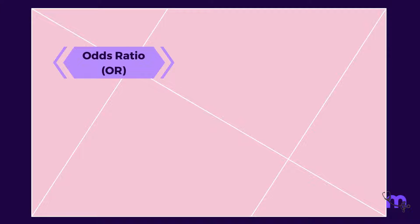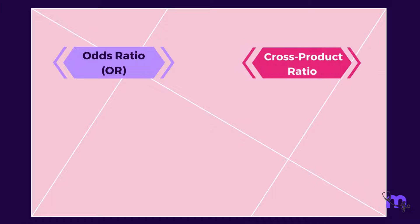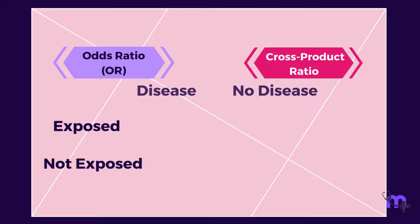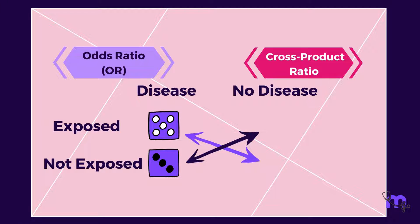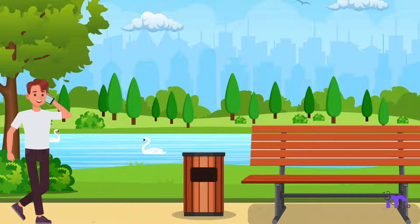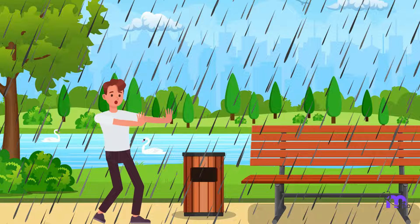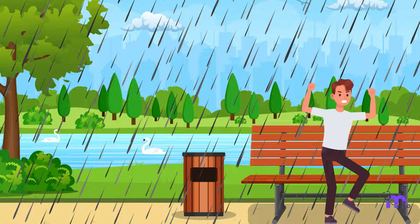An odds ratio (OR), also known as a cross product ratio, is a measure of the association between an exposure and an outcome. The OR represents the odds of an outcome occurring when given a particular exposure, compared to the odds of the outcome occurring in the absence of that exposure. In simpler terms, consider the expression 'what are the odds?' — commonly used when something unexpected happens, like rain the moment you step outside.